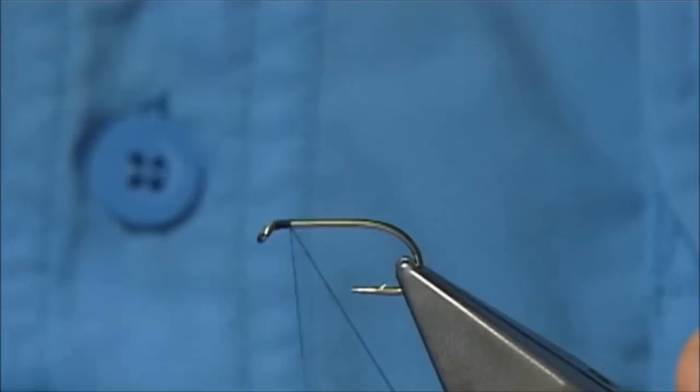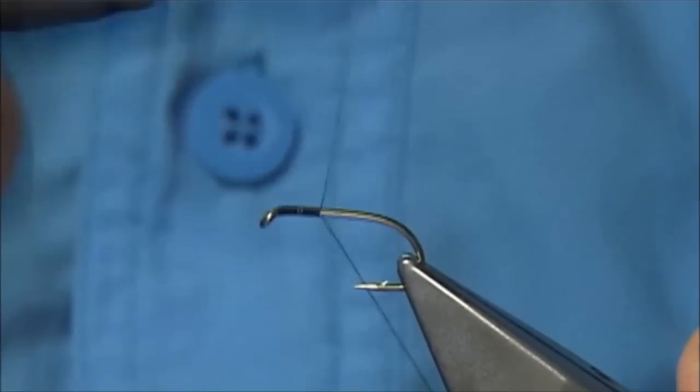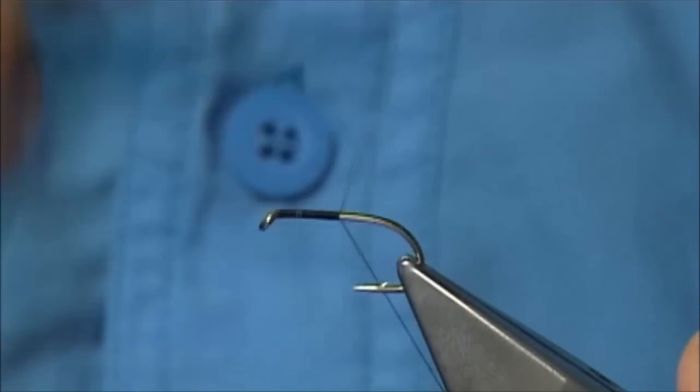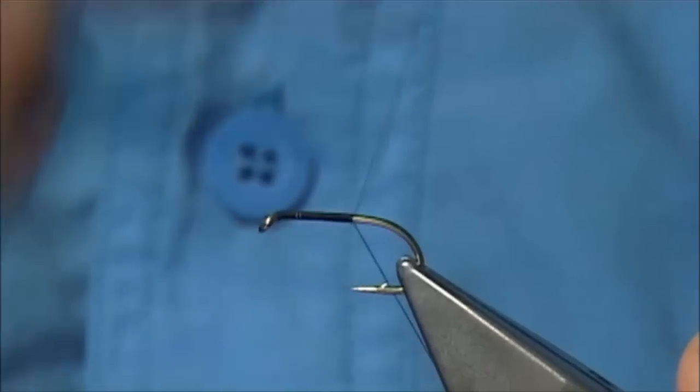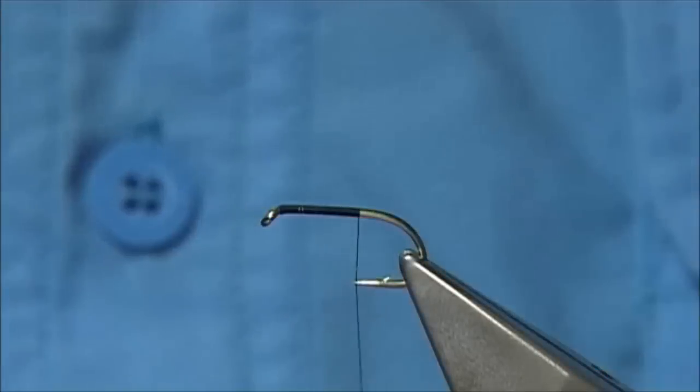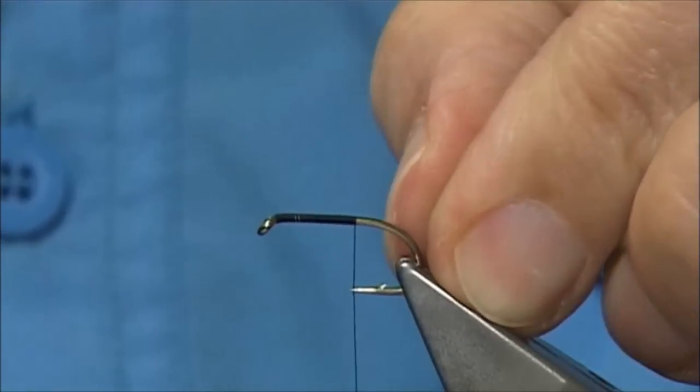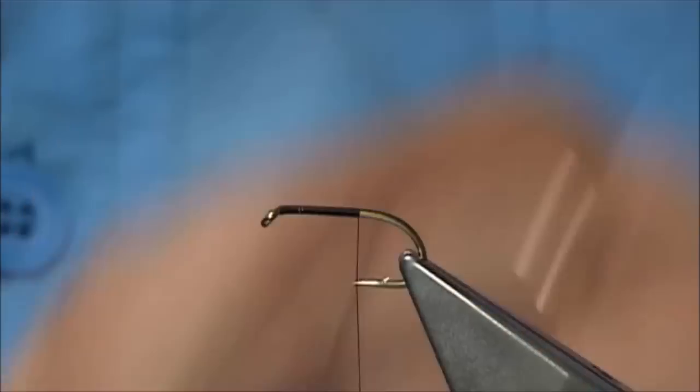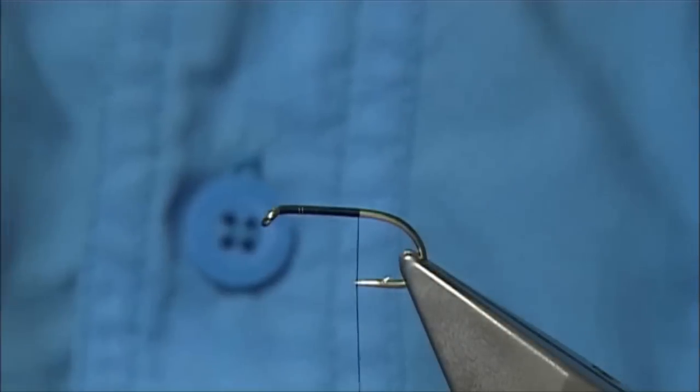We simply start with thread at the eye. This one's tied with the body style tied short, so I run the thread to the point. You can get them even shorter than this. Some go traditionally towards the barb of the hook. With this one, I'm to the point.